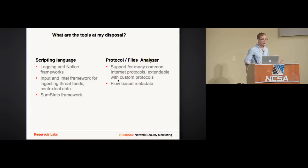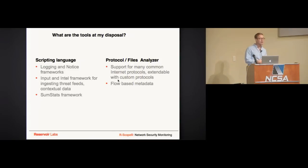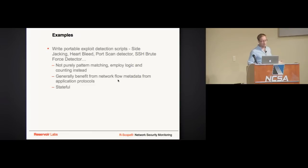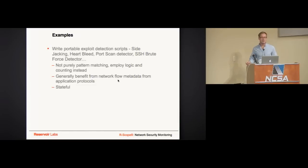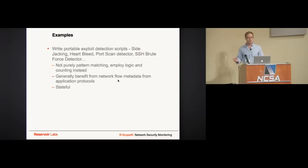You can use the logging framework and notice framework to alert on things. You can ingest data from other parts of your environment — matching usernames, MAC addresses, and IP addresses — and you have a really robust protocol parser at your disposal. Examples of great Bro scripts: the sidejacking script from around 2010, the Heartbleed detector, port scan detector, and brute force detector. These employ logic and counting, benefit from flow-based metadata, and are stateful.